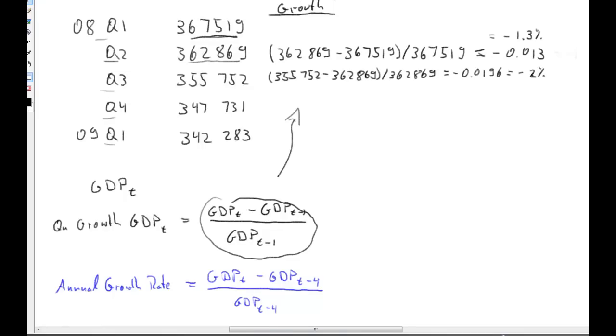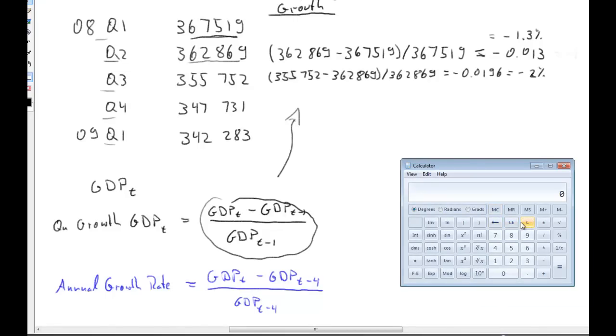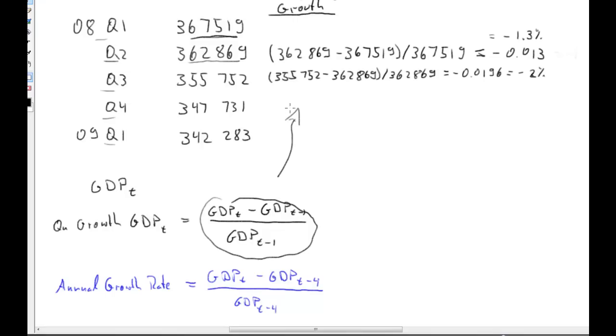So let me just quickly do that here. We have 347,731 minus 355,752 equals divided by 355,752. That is negative 2%. So, here we get negative 0.0225. So, that is about negative 2.3%.